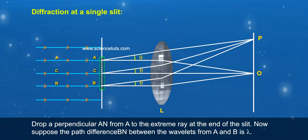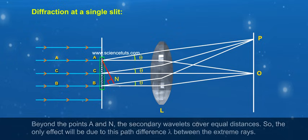Drop a perpendicular A-N from A to the extreme ray at the end of the slit. Now suppose the path difference B-N between the wavelets from A and B is lambda. Beyond the points A and N, the secondary wavelets cover equal distances. So the only effect will be due to this path difference lambda between the extreme rays.